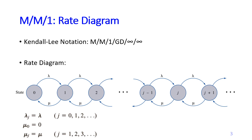Here is the rate diagram for an M/M/1 queuing system. The states show the number of customers present in the system. Using the terminology of the birth and death process, the birth rate in the M/M/1 system is always lambda, and the service rate is always mu for all states, except that for state zero, mu zero equals zero.